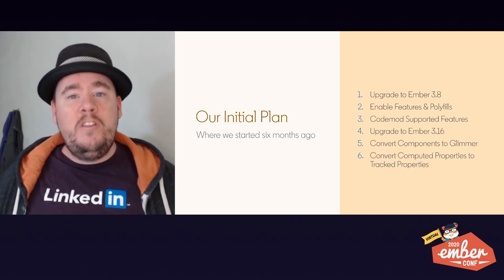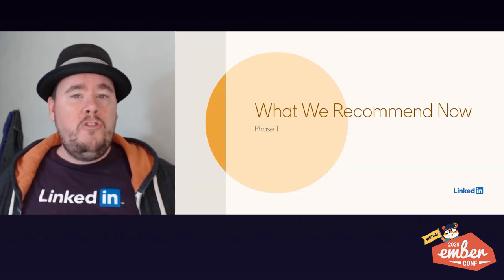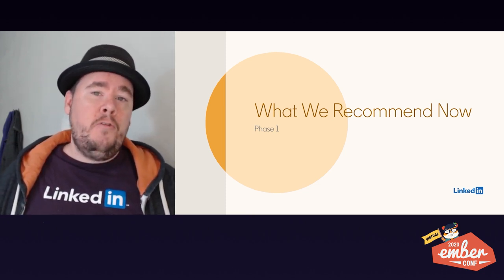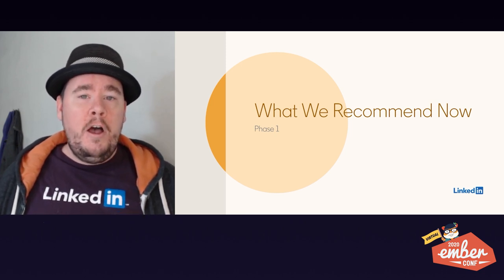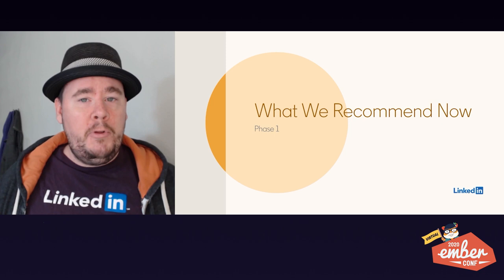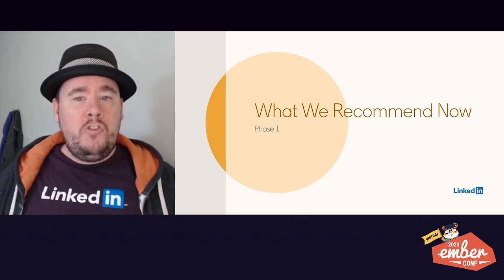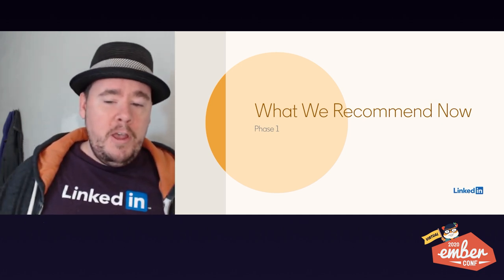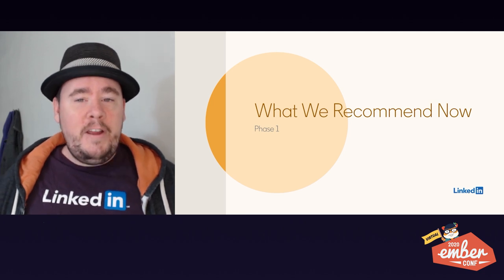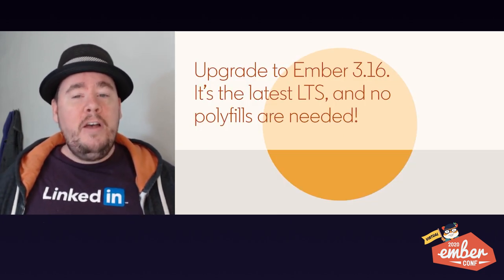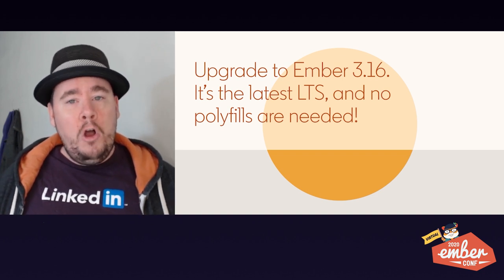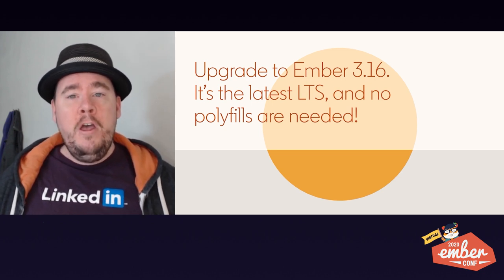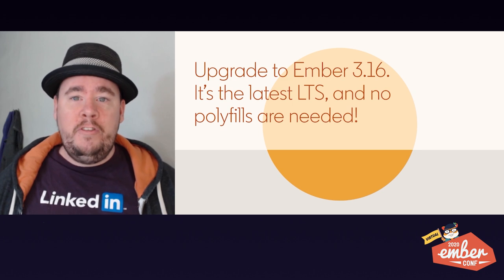However, things have changed a little bit since we initially created that plan. I want to talk to you all about what we would recommend now if you're starting an Octane migration today. I'm going to break that down into about four phases that allow you to cohesively accomplish a particular goal and then start working on the next phase while you reap the benefits of those changes. The first thing you can do is upgrade to Ember 3.16. It's the latest LTS — no polyfills needed — and because it's an LTS, you're going to have long-term support from the Ember community for security fixes and bug fixes while you continue going through your migration steps.